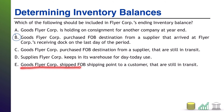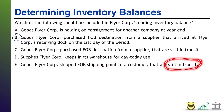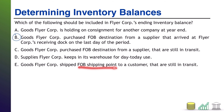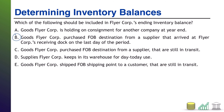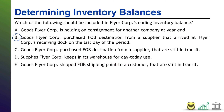Option E: Goods FlyerCore shipped — so now we're the shipper — FOB shipping point to a customer that are still in transit. We are the shipper in this case, and the terms say once it ships, ownership changes hands. The fact that it's on a truck, train, or boat tells us it shipped. It hasn't arrived at the destination, but that's irrelevant — we shipped it. FOB shipping point means legal title changed hands, so that no longer belongs to us. We would not include that in our inventory either.